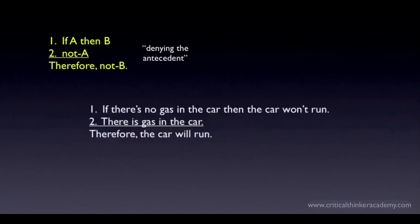Here's another one, inspired by an example from the last tutorial. If there's no gas in the car, then the car won't run. There is gas in the car, therefore the car will run. Note that we've eliminated the negations in the second premise and the conclusion by using double negation on the antecedent and the consequent.